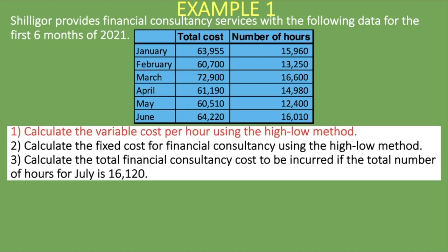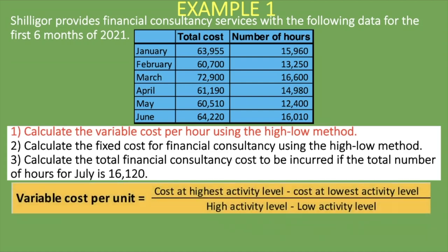Let's look at requirement one: calculating the variable cost per hour using the high-low method. The formula is the cost at the highest activity level minus the cost at the lowest activity level, divided by the high activity level minus the low activity level. The activity is the number of hours. Looking at the data: January has 15,960 hours; February 13,000; March 16,600; April 14,000; May 12,000; and June 16,010 hours. We can see that March has the highest number of hours at 16,600.